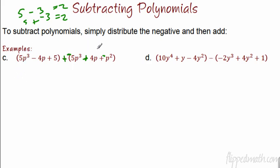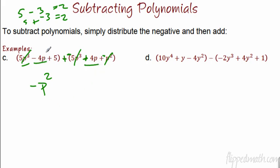I'm going to start with the term with the highest degree: 5p to the third. There's a positive 5p to the third and a negative 5p to the third — those terms cancel out. Then we go down to p to the second. Here we have a negative p to the second, and there's no other second term, so that's the only one we have. We have negative 4p and a positive 4p — they're going to cancel out. And lastly, we have the plus 5. So the answer for c is negative p squared plus 5.